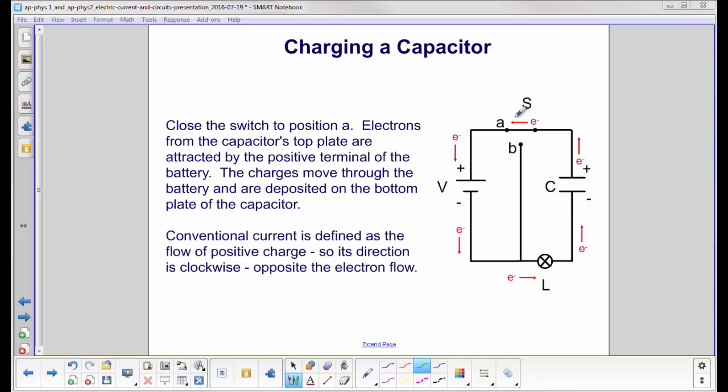We now close the switch to position A. We have a complete circuit, and electrons from the capacitor's top plate are attracted by the positive terminal of the battery. The charges move through the battery, they gain energy, and are deposited on the bottom plate of the capacitor. Recall, conventional current is defined as the flow of positive charge, so its direction is opposite the electron flow. So conventional current would be going this way.